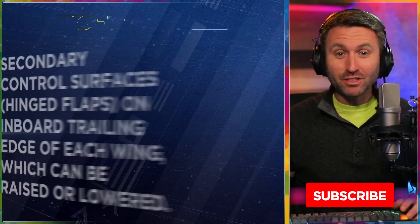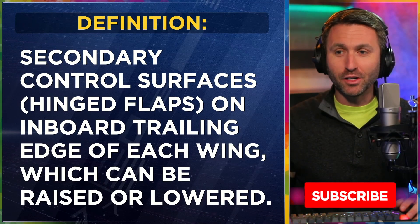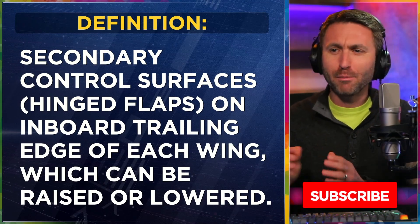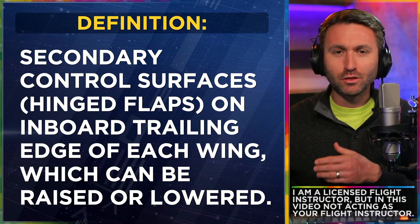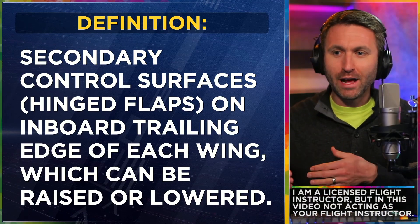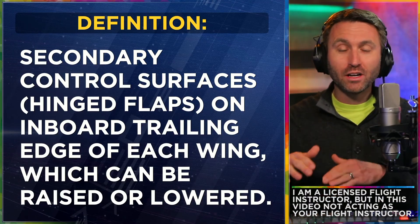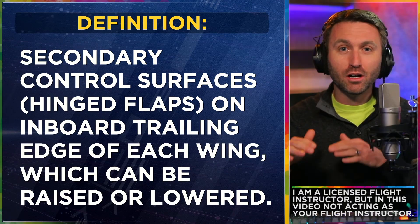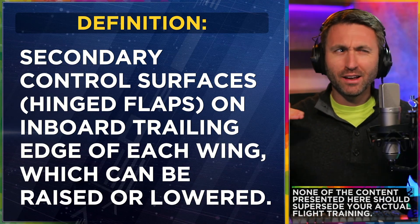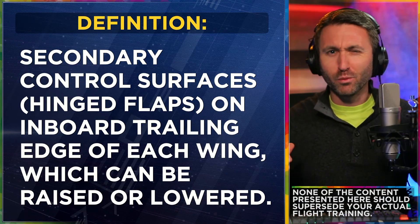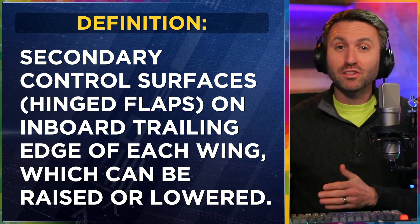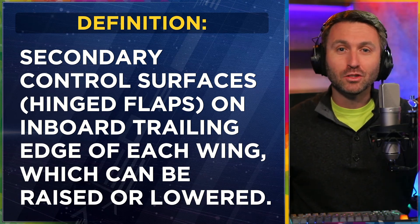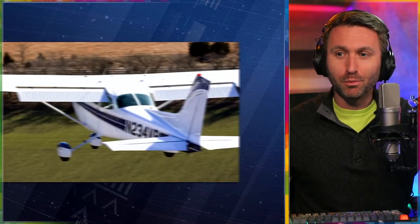There's actually a lot more than you think to get into here. What is the definition of a wing flap on an airplane? It's a secondary control surface, usually hinged flaps on the inboard trailing edge of each wing. You can't have flaps on just one wing or the other — you need them on both symmetrically. These flaps can be raised or lowered depending on what you're trying to accomplish.